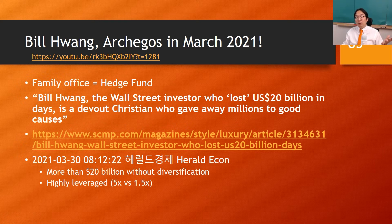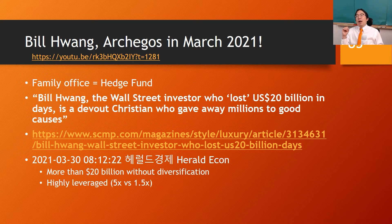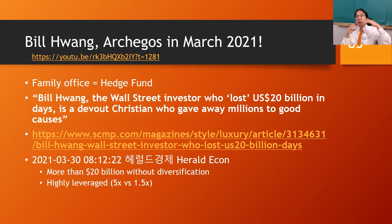He was managing a family office — not even a hedge fund, because it's only for one family. It had enormous assets, around $30 billion. The problem is he leveraged up the position so much — five times his equity. A typical hedge fund levers up by about two times, but five times is excessive.